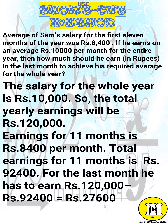The salary for the whole year is 10,000 rupees. Total yearly earnings will be 1,20,000 rupees. Earnings for 11 months is 8,400 rupees per month, so total earnings for 11 months is 92,400 rupees. For the last month he has to earn 1,20,000 rupees minus 92,400 rupees, which is 27,600 rupees.